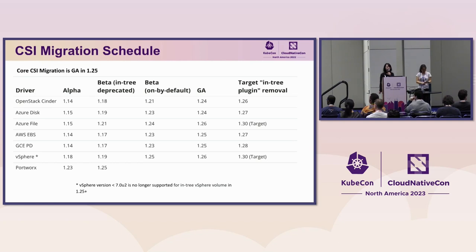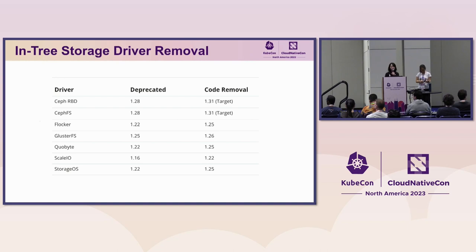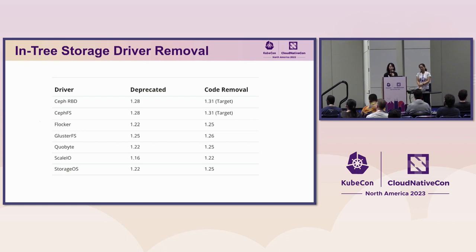CSI migration is something we have been working on for multiple releases. The core CSI migration feature moved to GA in 1.25. Other cloud providers including OpenStack Cinder, Azure Disk and File, AWS EBS, GCE PD, and vSphere all moved to GA. Some of the in-tree plugins are already removed and others are targeting code removal. Additionally, in-tree storage drivers that do not go through CSI migration — GlusterFS was removed in 1.26, and Ceph RBD and CephFS were deprecated in 1.28 and are targeting code removal in 1.31.